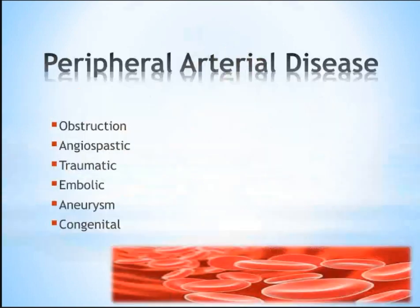What is peripheral arterial disease? It is an obstruction, or maybe angiospastic, or maybe traumatic, or maybe embolic type, or maybe aneurysmal, or maybe a congenital one.